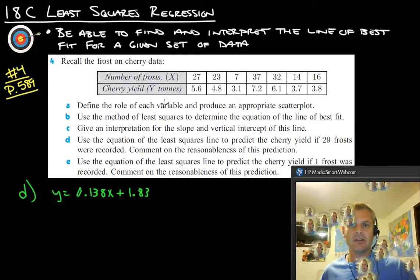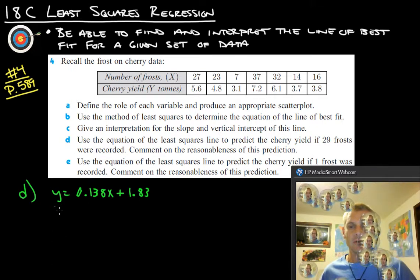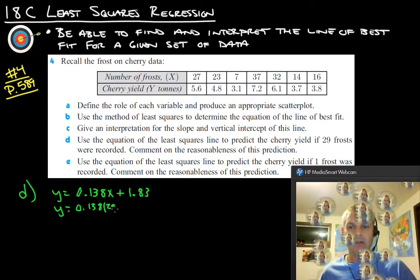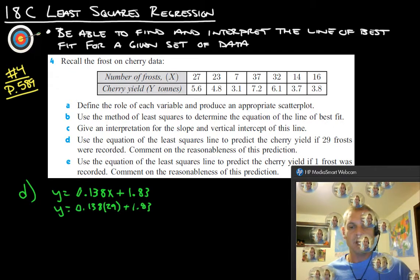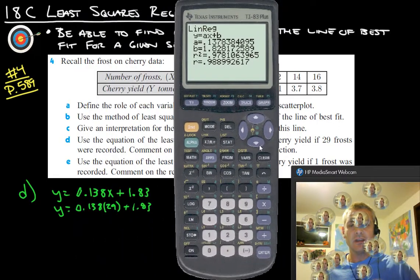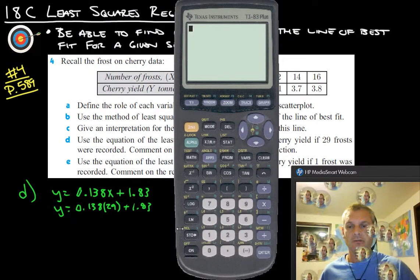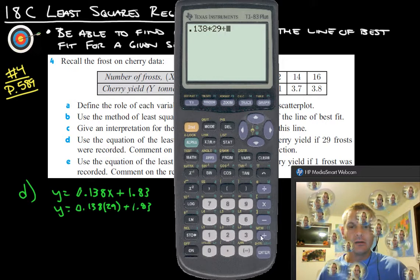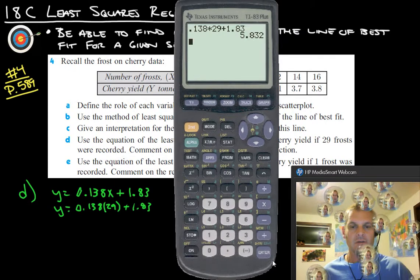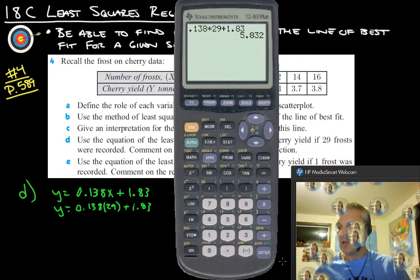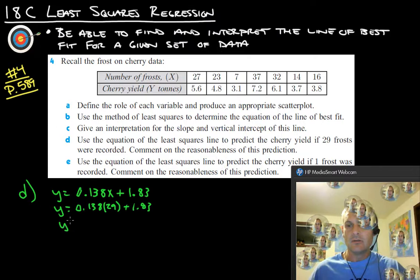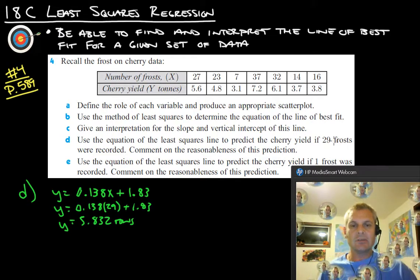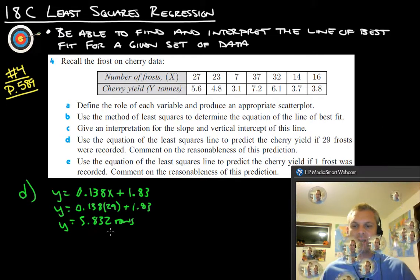And now we're going to want to know if there's 29 frosts. So again, frost, if you look up here, frost is our x. So we're just going to plug 29 in for x and see what we get. So we get y equals 0.138 times 29 plus 1.83. So let's use our graphing calculator for that, or just any old calculator really will work for that. So we do 0.138 times 29 plus 1.83. And we get 5.832 tons. 5.832 tons. So we would expect if we had 29 frosts, you'd get 5.83 tons.